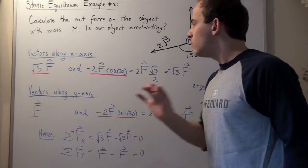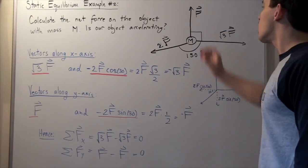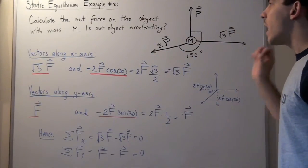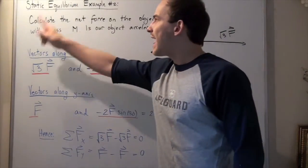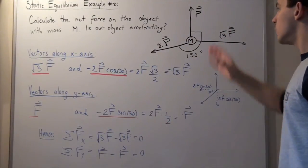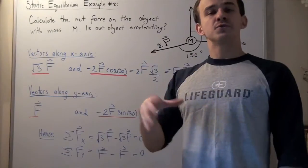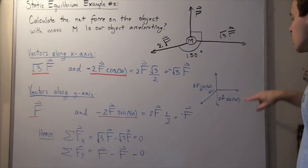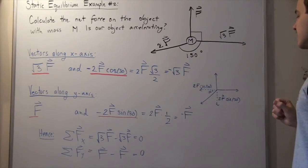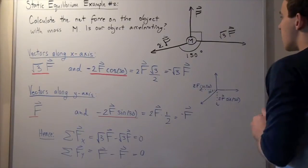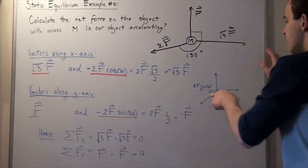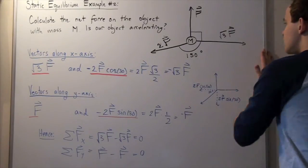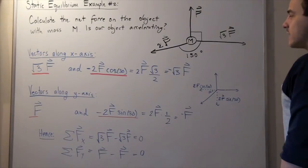Now let's zoom out. We want to sum all the vectors along the y-axis and all the vectors along the x-axis. If we get zero in both cases, the object is not accelerating and is in static equilibrium. If either net force is not zero, the object is accelerating and not in static equilibrium. Let's begin with the vectors along the x-axis, which are √3F and −2F·cos30.